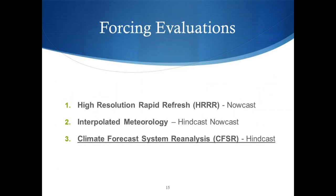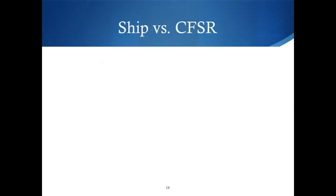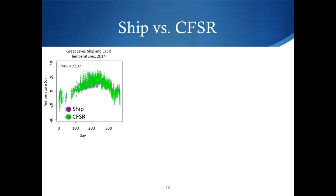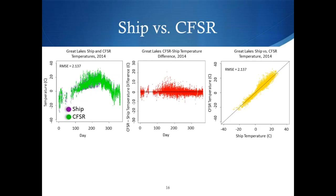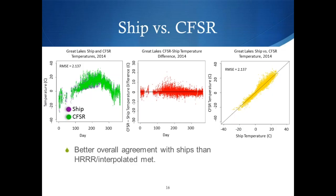Next, CFSR — a reanalysis that can go back to the 1970s, really helpful for looking back in time. In the temperature time series, there aren't any noticeable large differences between ship and CFSR. The difference plot shows no large biases either way for any particular time of year. The one-to-one plot shows most points falling along the line, and the root mean square error at 2.13 is lower than for HRRR and interpolated. However, in the difference plot during summertime, there are a few larger outliers than compared with HRRR and interpolated meteorology.